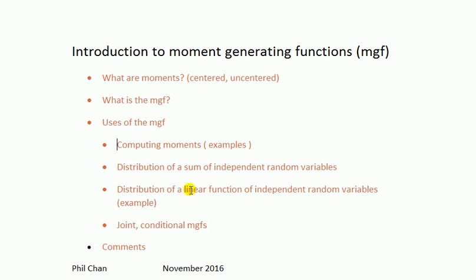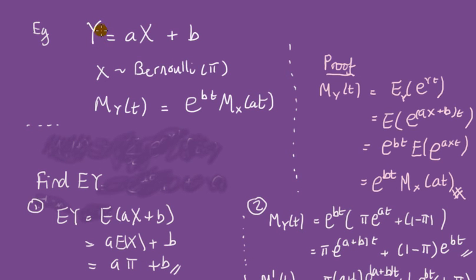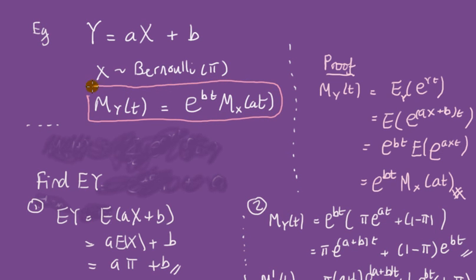Another use is to find out more about the distribution of a linear function of independent random variables. If I know variable x, what can I say about the moments of a linear function of it? Let's look at an example. Say I have a linear transformation Y = a*X + b on x, which is Bernoulli from above, where a and b are any real numbers — y is related to x through a straight line. The MGF of this new transformed random variable is given by this expression here, and here's the proof for those interested.